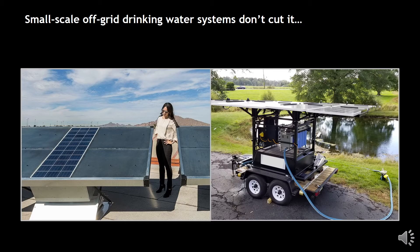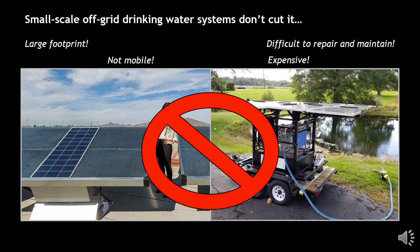Small-scale, off-grid water purification systems are typically large, immobile systems that are both expensive and have several moving mechanical parts that are difficult to repair and maintain.